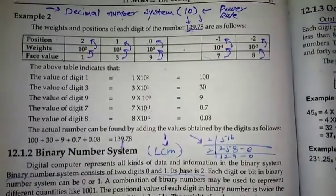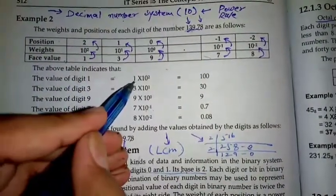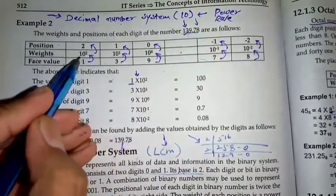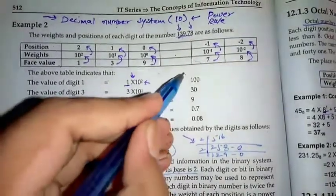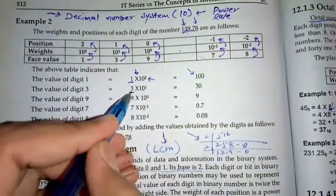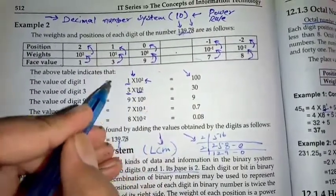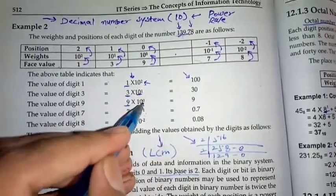So let's solve it. First for the one, one multiply by 10 to the power 2. Next we have three, 10 to the power 1. Next we have 9, 10 to the power 0.